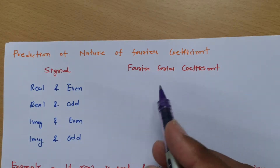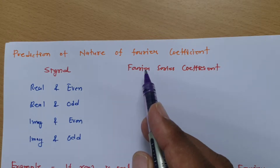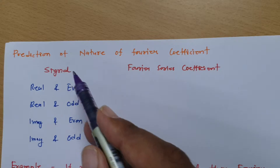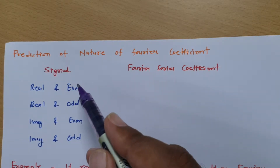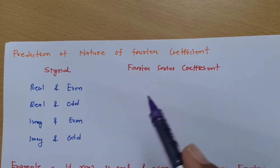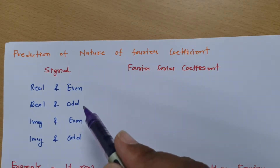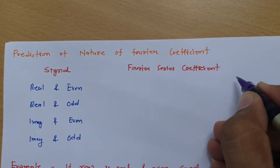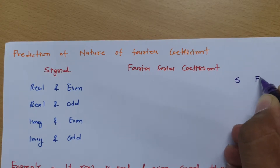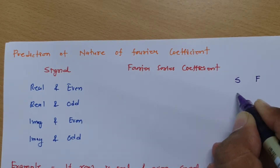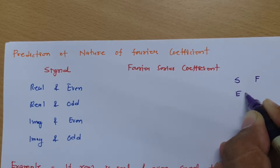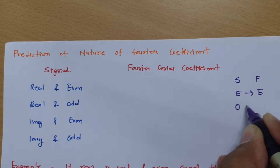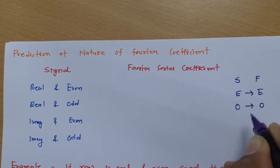Before I explain the nature of Fourier coefficients, one thing we need to understand is: if you have a signal and that signal is even, then the Fourier coefficient will also be even. If you have an odd signal, then the Fourier coefficient will be odd. So an even signal maps to an even Fourier coefficient, and an odd signal maps to an odd Fourier coefficient.